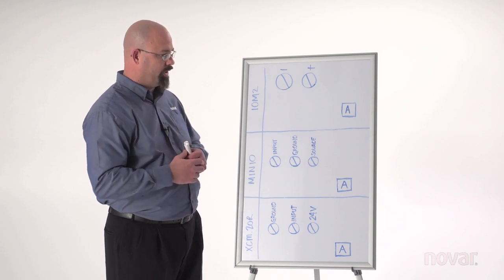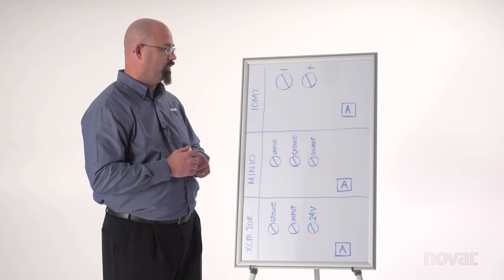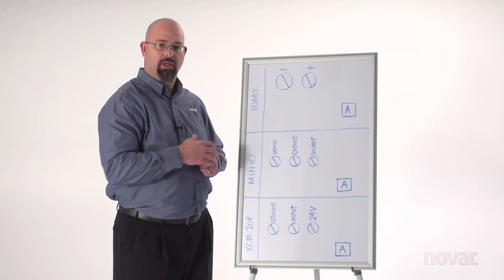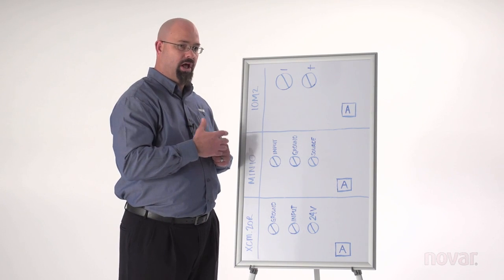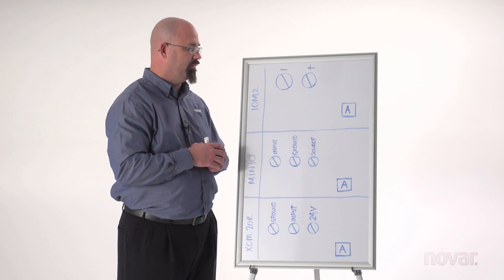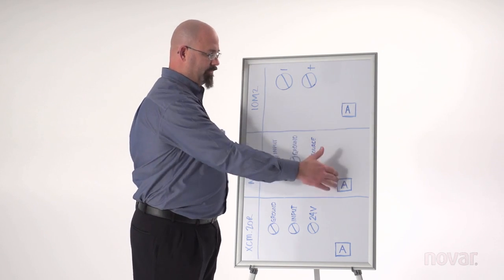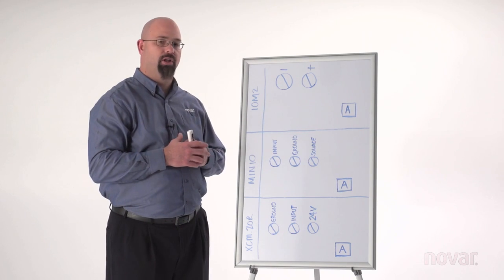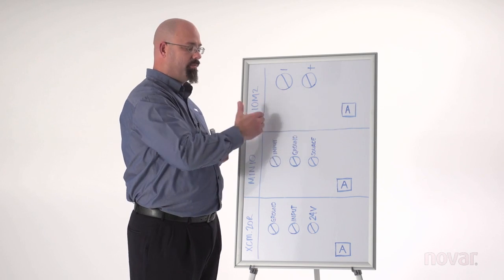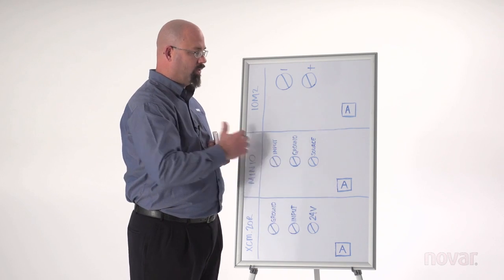Like an XEM-20R, which is actually an executive controller, not a module, a MIN-IO, and an IOM-2. The IOM-2 is the same as an IOM, a SAVI, or the original executive controller. You will see many of those. In this example, this analog sensor is going to be a loop-powered sensor, meaning the power from the sensor comes from the NOVAR board, executive or a module.